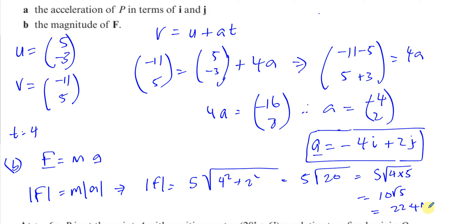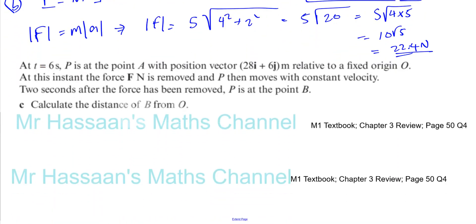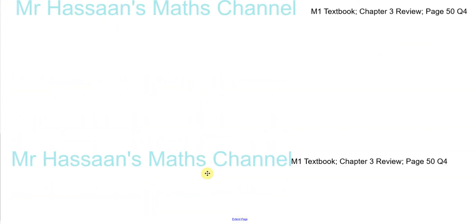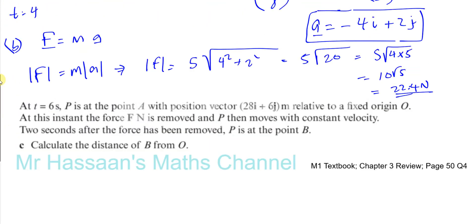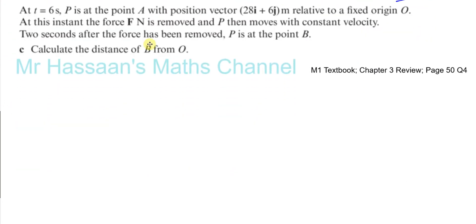It didn't say leave it as an exact answer, so either form is correct. Next, part C: at time equals 6 seconds, P is at the point A with position vector 28i plus 6j relative to a fixed origin O. At this instant the force F is removed and P then moves with constant velocity. Two seconds after the force is removed, P is at the point B. Calculate the distance of B from O.